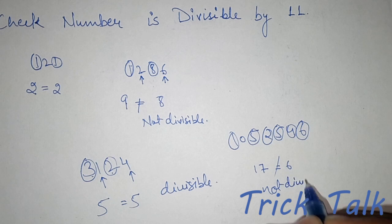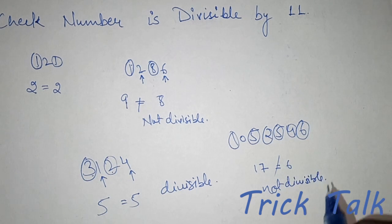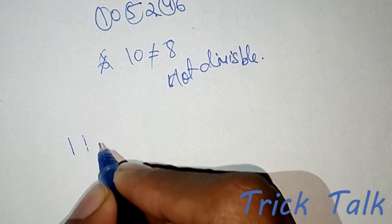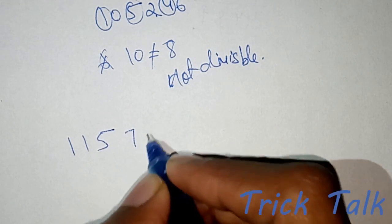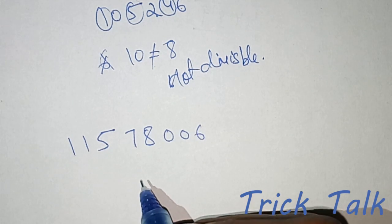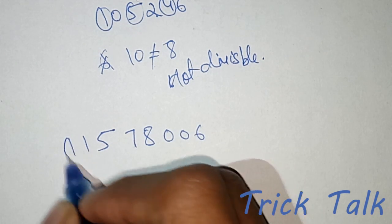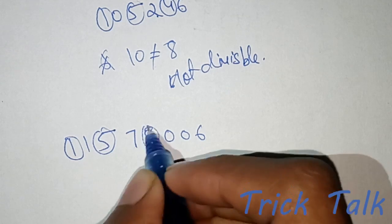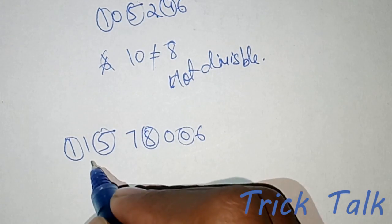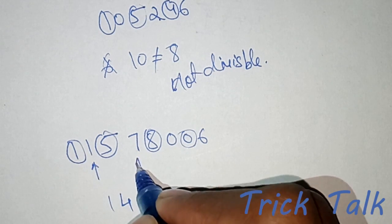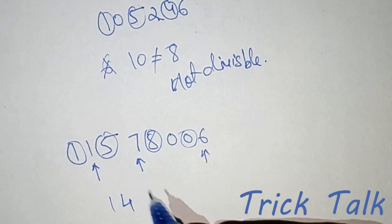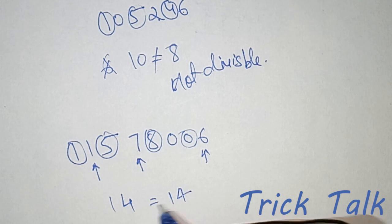Let's check this trick with another example: 11578006. Sum the alternate digits 1, 5, 8, and 0 — the sum comes out to be 14. Summing up the other alternate digits, the sum again comes out to be 14. The sums are equal, so this number is also divisible by 11.